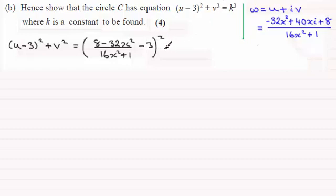Then we've got plus v squared and v is the imaginary part and the imaginary part is just going to be 40x over (16x² + 1). So here we've got 40x all over (16x² + 1) and all of that is squared.